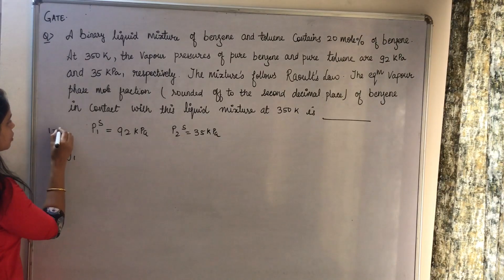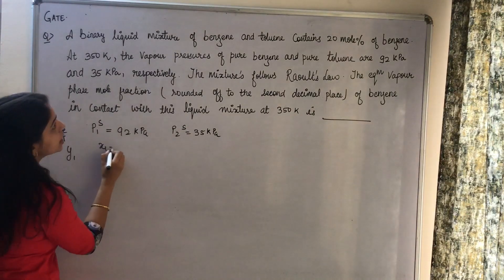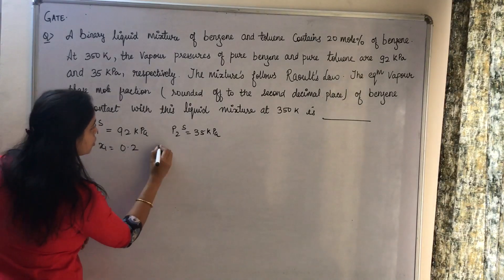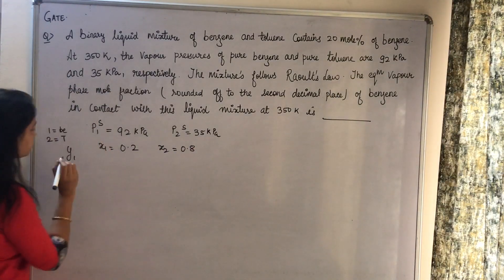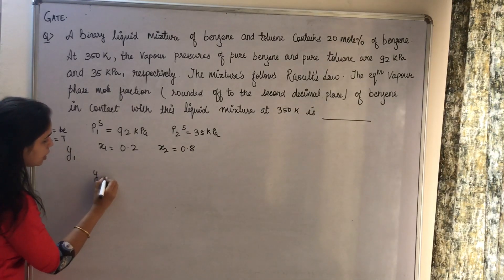Let's take component 1 as benzene and component 2 as toluene. So x1 is 20 mole percent, which is 0.2, and automatically x2 is 0.8. We know that from Raoult's law, y1 equals x1 times P1S upon total pressure.